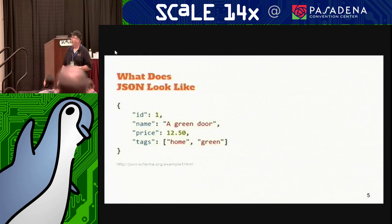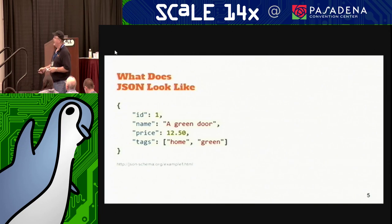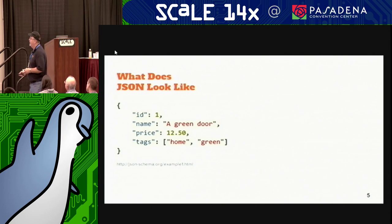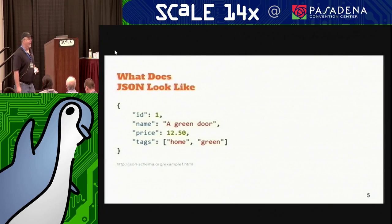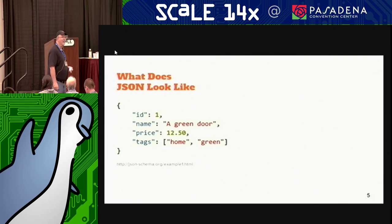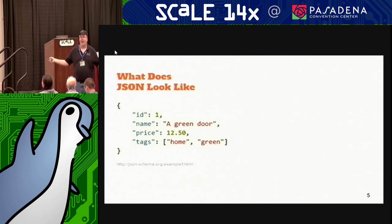What does JSON look like? It has a key and a value. The value can be a number, a string, a real, an array of strings — just about everything. The JSON spec is rather loosey-goosey; I think it's five or six pages, and there are a lot of things they don't specify. Which is great for programmers, because if they don't specify it, you're going to do it your own way anyway.